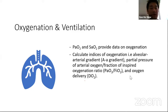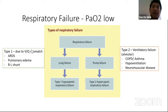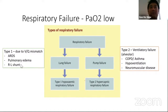When a patient's PaO2 is low, we divide respiratory failure into two components. Type 1 respiratory failure is hypoxemic respiratory failure due to lung failure — commonly seen in ARDS like COVID patients, pulmonary edema, or right-to-left shunt. Type 2 is ventilatory or alveolar failure, seen in patients with COPD, asthma, hypoventilation, or neuromuscular disease, presenting with hypercarbic respiratory failure together with hypoxemia.